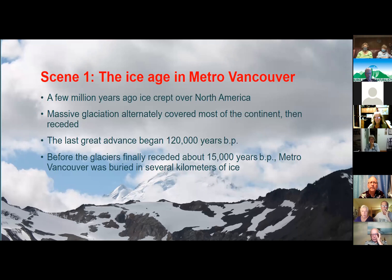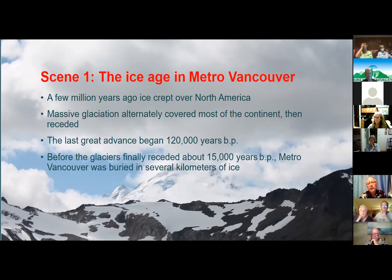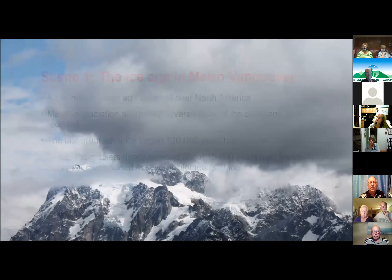Going back before the Anthropocene, we had the Ice Age here in Metro Vancouver. A few million years ago is when the ice first came. You have to use your imagination — the best example nearby is Mount Baker, where you can see some glacial activity. But there was massive glaciation covering most of the continent, going back and forth. The last glacial advance came 120,000 years ago, and before the glaciers finally left, we were buried by several kilometers of ice.